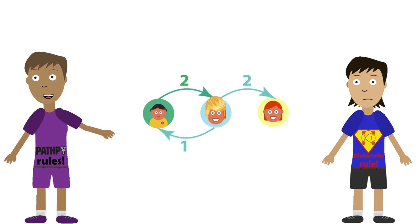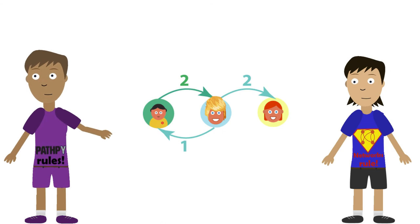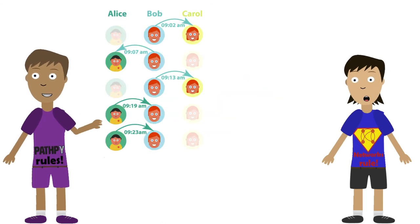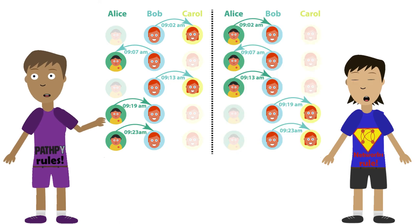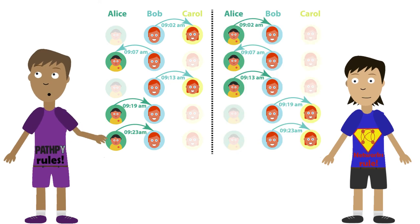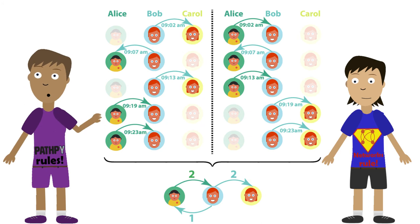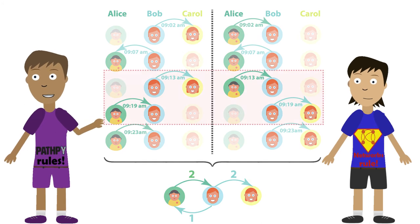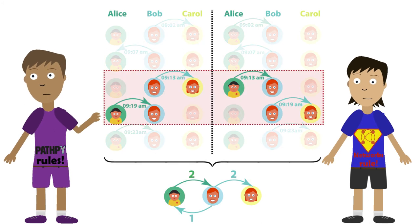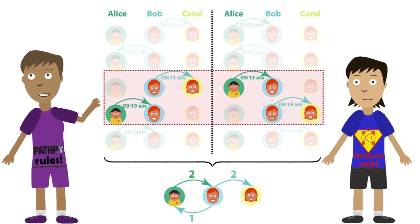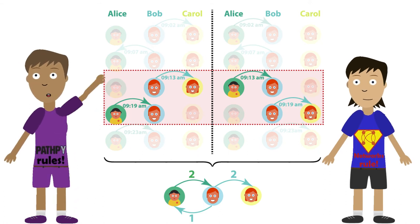Not so fast. You just discarded the timing and ordering of interactions. Consider these two interaction sequences between Alice, Bob and Carol. For you, both are the same social network, but due to the order of interactions, in the left example, no path in time connects Alice via Bob to Carol. Nettie, you forget that the order of interactions influences paths in temporal networks.